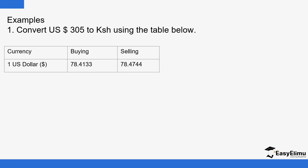For example, somebody just landed in Kenya with 305 US dollars and walks into the bank to do the exchange. The bank will be buying these foreign currencies from the individual. When converting US dollars to Kenya shillings — someone coming in with dollars from the United States — the bank buys the dollars, so we use the buying column.